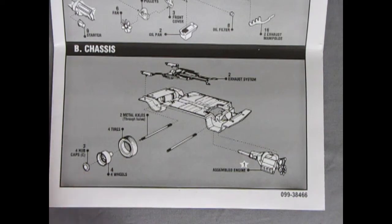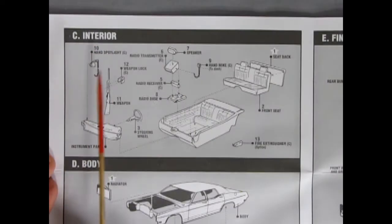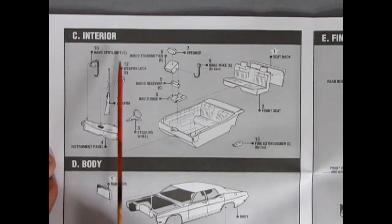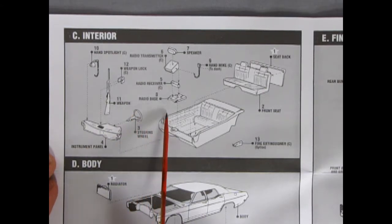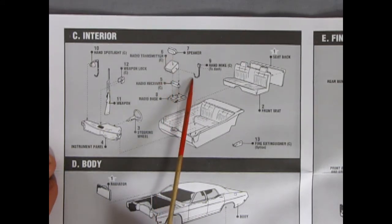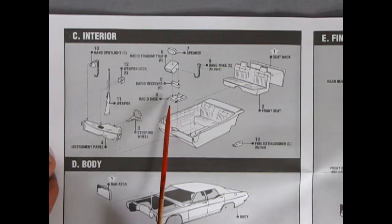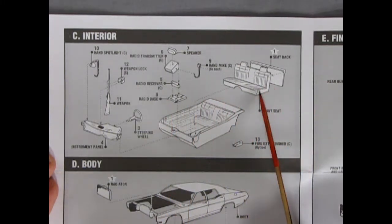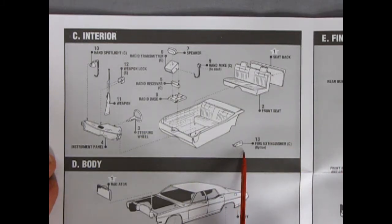And inside we have our interior with a handheld spotlight, the weapon lock for our rifle. There's our instrument panel so we know how fast we're going and how fast the perpetrator is going, our steering wheel, our radio base, radio receiver, the radio transmitter and the speaker, and our hand mic so that we can radio back into the station and give them our 20. There's our seat back and front and our fire extinguisher just in case it gets a little too hot. The only thing I might recommend is the safety screen just in case we gotta put a guy in the back.